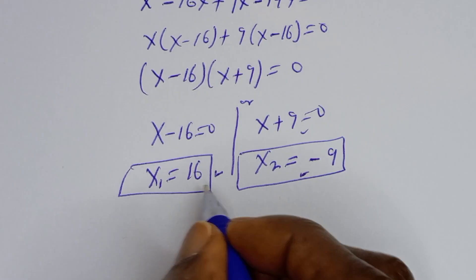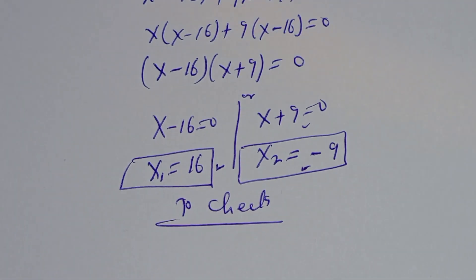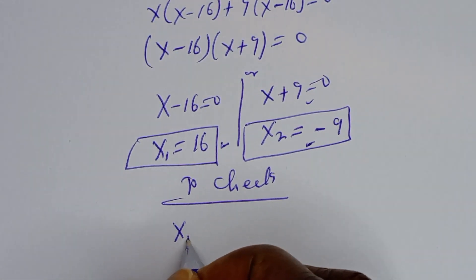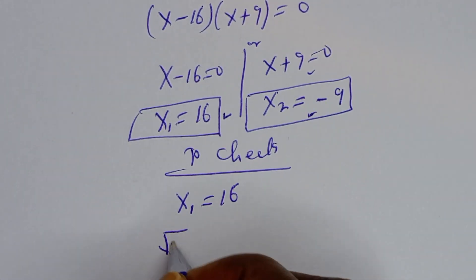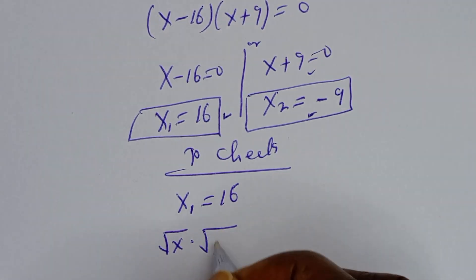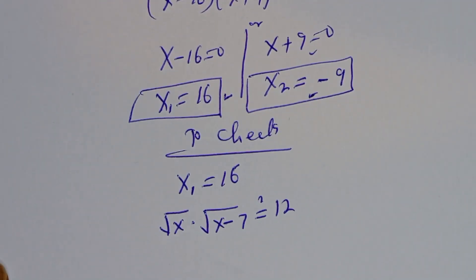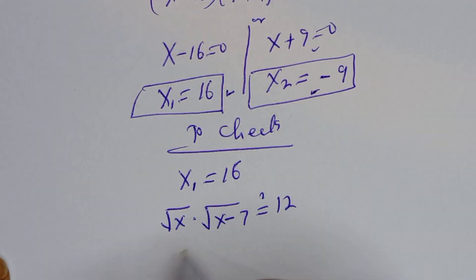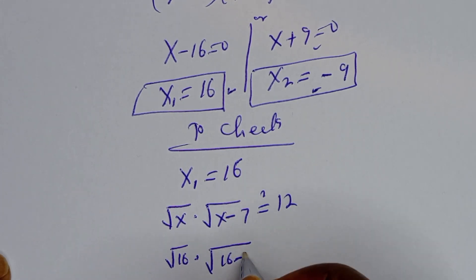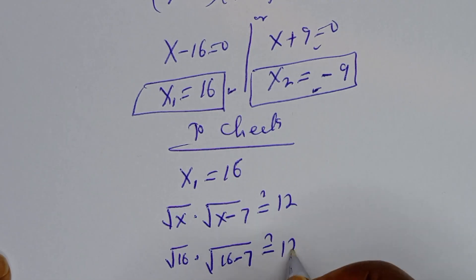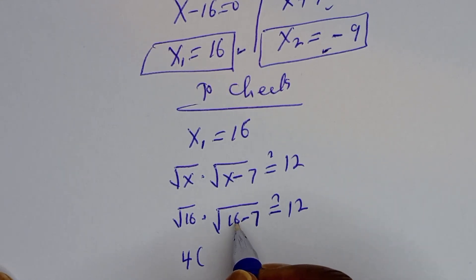We can check to confirm if this answer is correct. When s equals 16, we have square root of 16 multiplied by square root of 16 minus 7, which must equal 12. Square root of 16 is 4, and 16 minus 7 gives square root of 9.